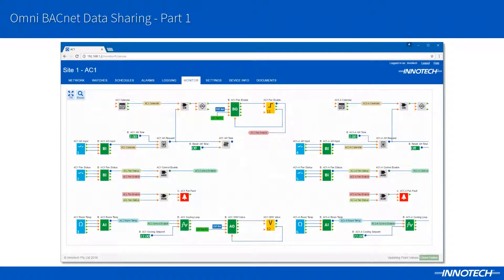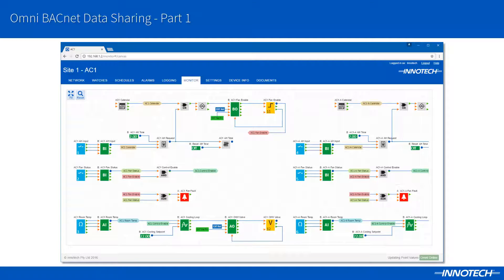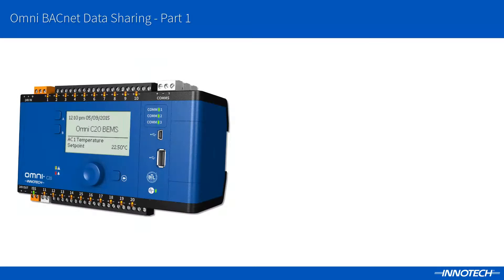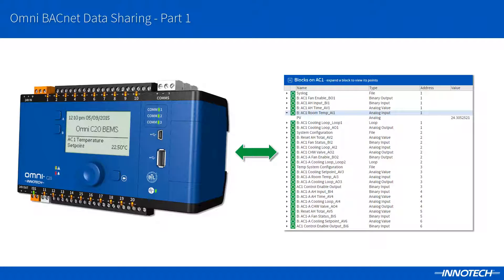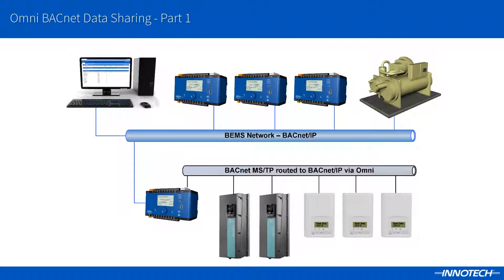When programming the OMNI controller, we can utilise BACnet object blocks — the green block shown — to allow other BACnet devices or clients to view and request block values over the BACnet network. Once configured, OMNI is a BACnet device with objects, providing a fully native BACnet solution. This can open new possibilities for data sharing, as each BACnet block object can be seen from any BACnet device or client, providing global data on the BACnet network.